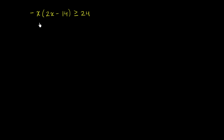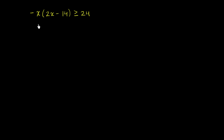We've got the inequality negative x times the expression 2x minus 14 is greater than or equal to 24. I encourage you to pause this video and think about what the solution set to this inequality would actually be, and plot the solution set on a number line. So now let's try to simplify this a little bit.